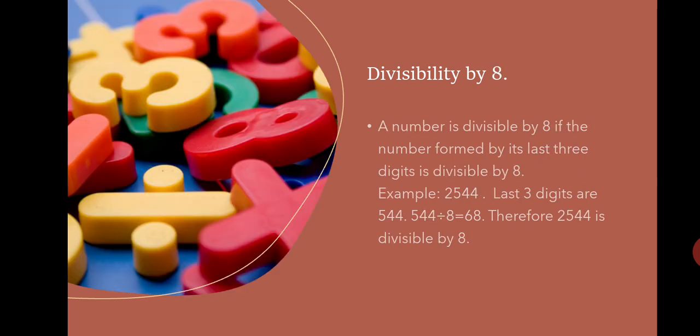Divisibility by 8: A number is divisible by 8 if the number formed by its last three digits is divisible by 8. For example, 2544. Here the last three numbers are 544. When we divide 544 by 8, you get 68. Therefore, 2544 is divisible by 8.